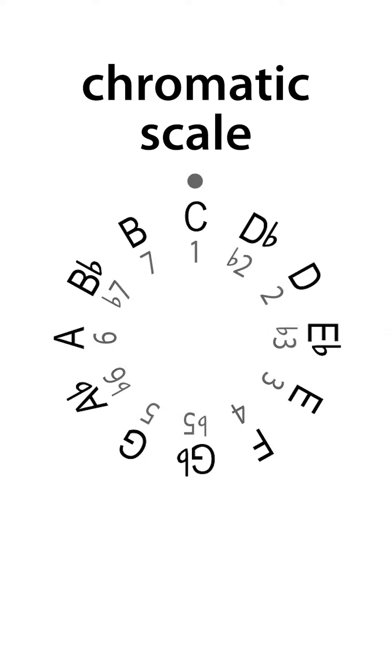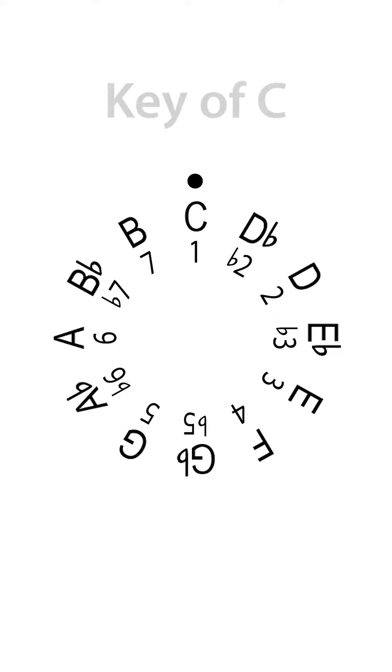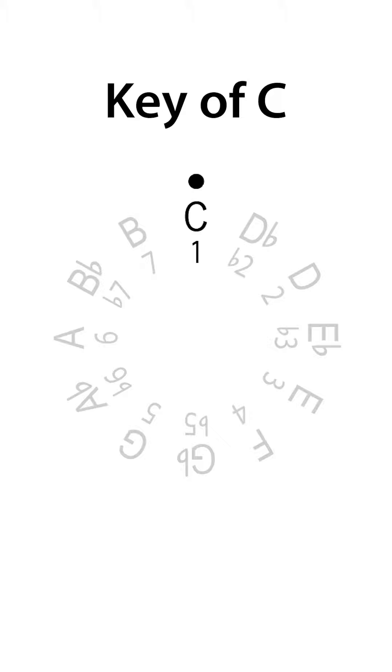To label the intervals, we use numbers, and when we align the number one with C, for example, we get the key of C, where C is 1, Db is b2, D is 2, etc.